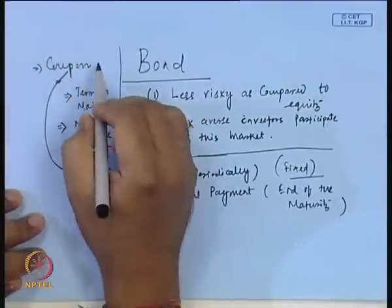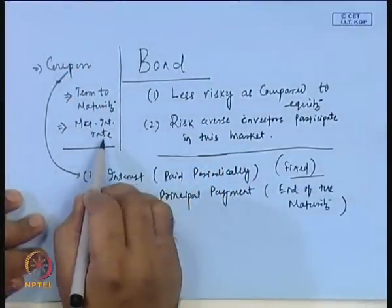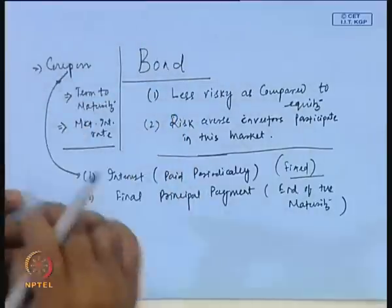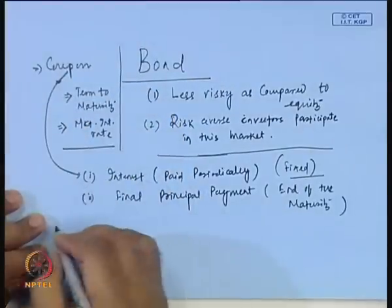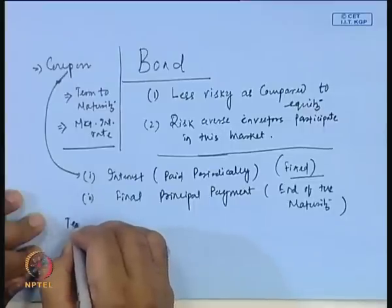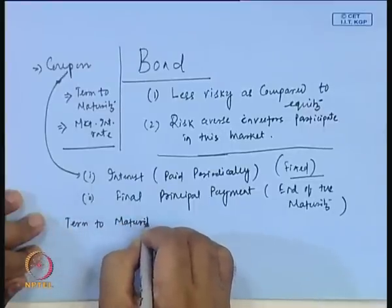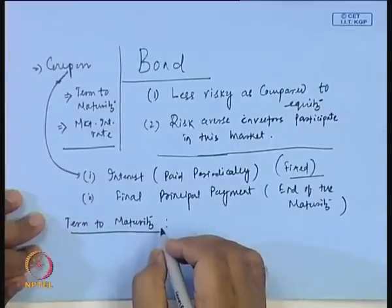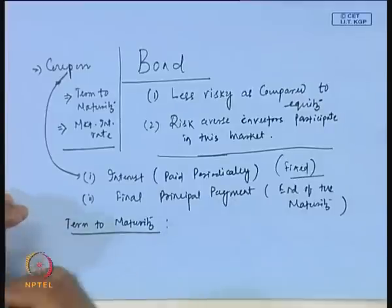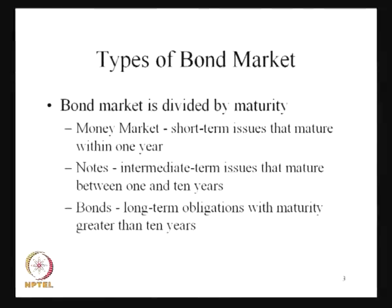Whenever we have a coupon, a term to maturity, and a market interest rate — which are the different features involved in this bond — the bond market is defined on the basis of the term to maturity. The money market deals with short-term issues that mature within one year. Then we have notes, which are intermediate-term issues that mature between one year to ten years. Then we have bonds, which are basically defined as long-term obligations with maturity greater than ten years.